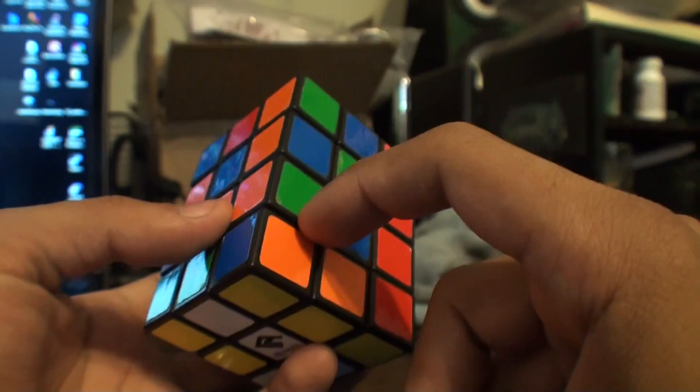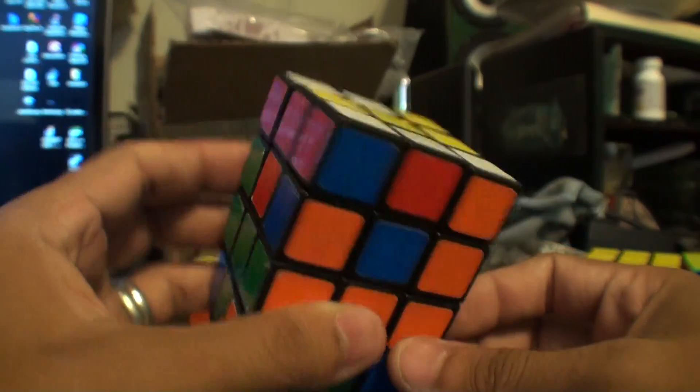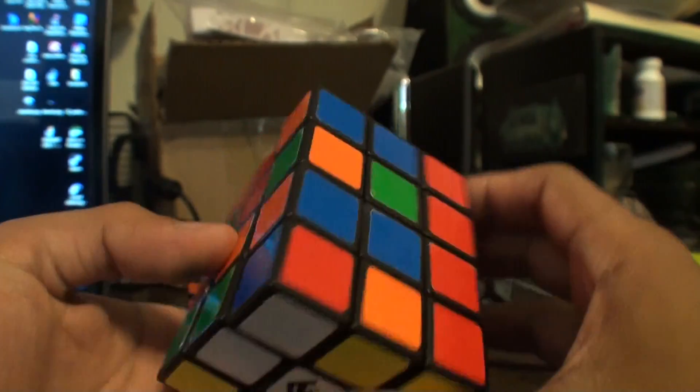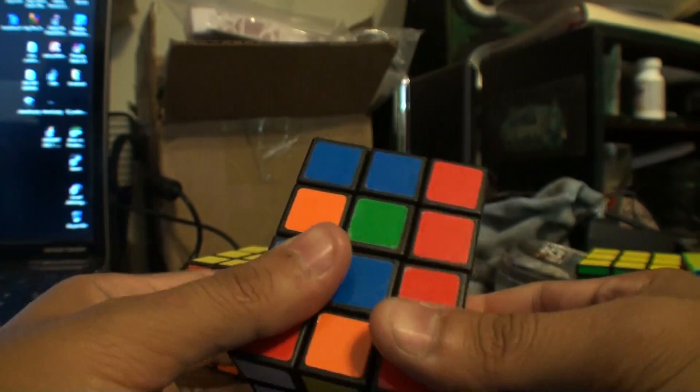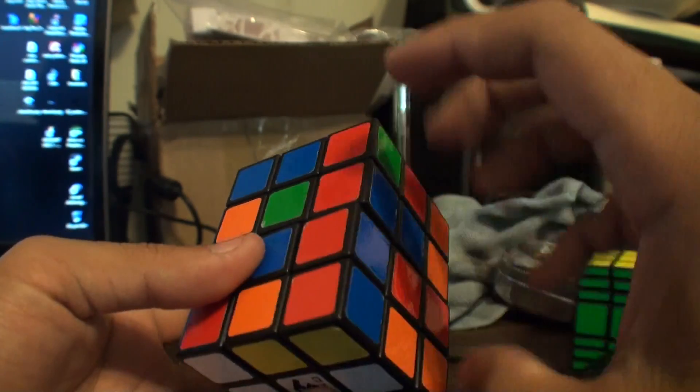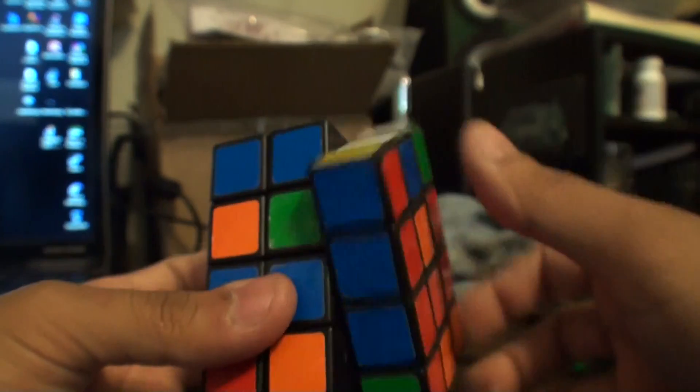And this one is not right because it has to be blue. So we do the opposite colors R U R' U' R. And this one has to be blue. Okay, so yeah, do the same algorithm.